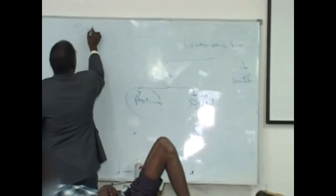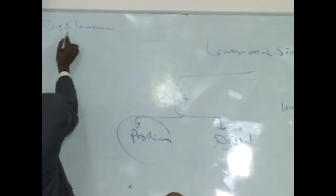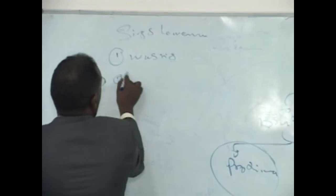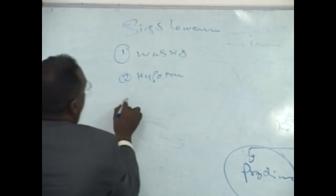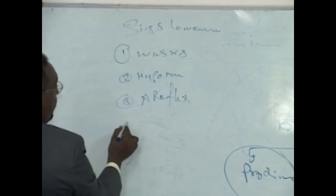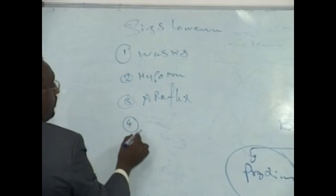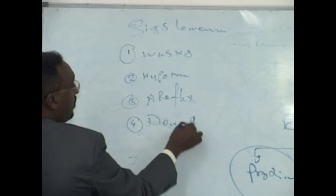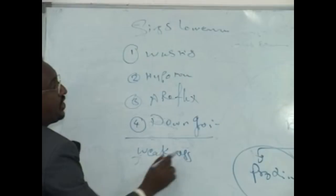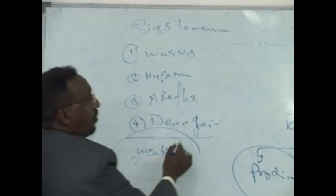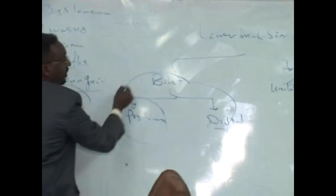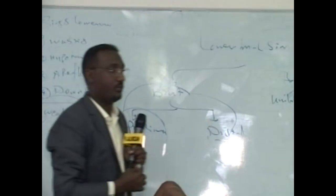Signs of lower motor neuron lesions in the form of wasting, hypotonia, areflexia — or could be hyporeflexia — downgoing plantar, and weakness.